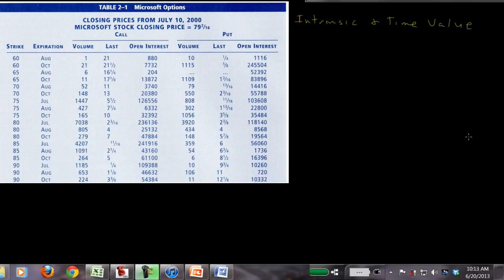So here we have a table of Microsoft options. And these are closing prices from July 10th, 2000. Microsoft stock closed then at 79 and 7 sixteenths. So if you look at this table, in this column here, we have the strike or the exercise price. And then we have expiration months.